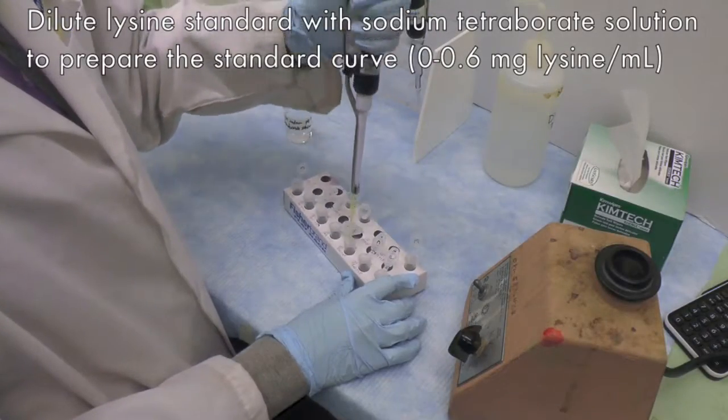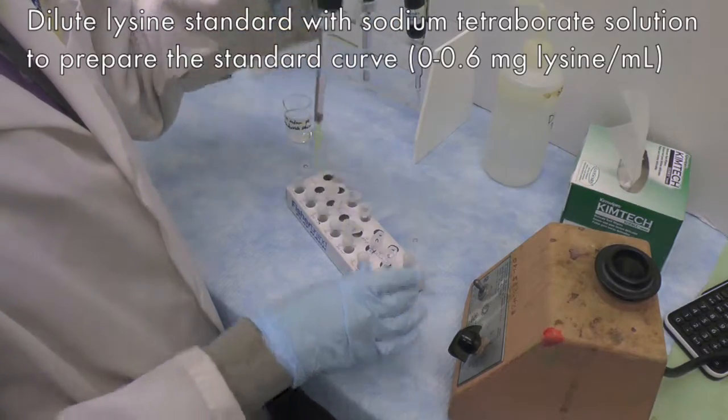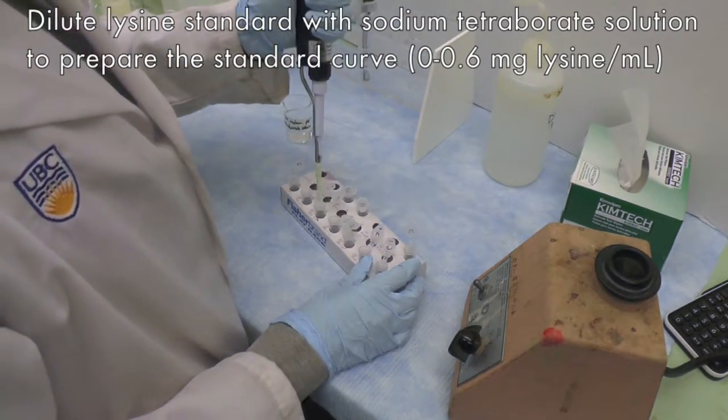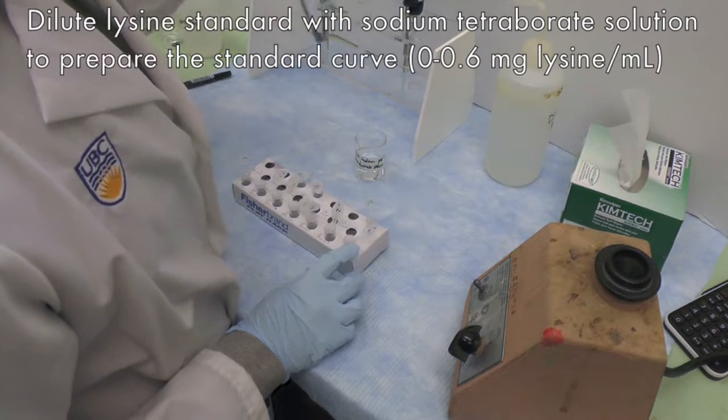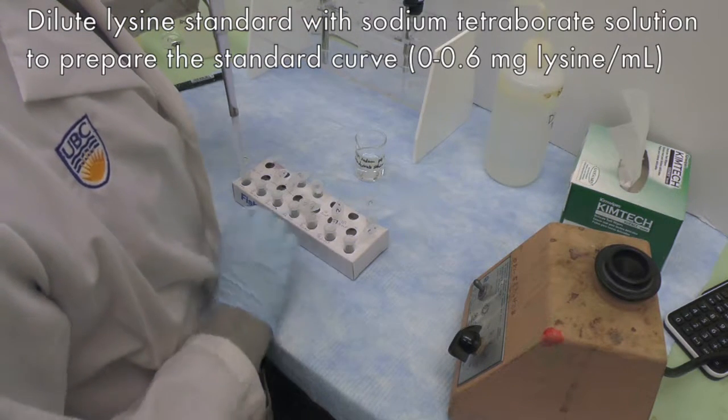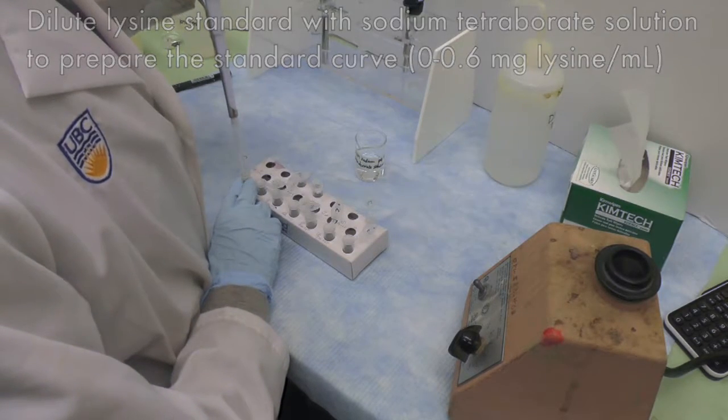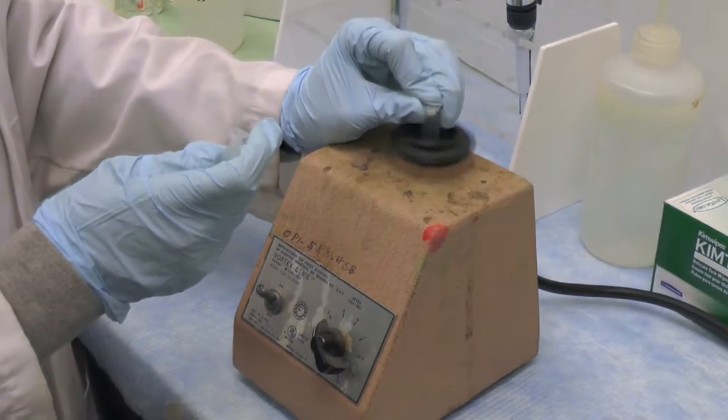Next, prepare the standard curve by diluting the 10 mg per milliliter lysine standard with sodium tetraborate solution at pH 9.0 so you have 5 to 6 standards between 0 to 0.6 mg lysine per milliliter. Vortex the standards.